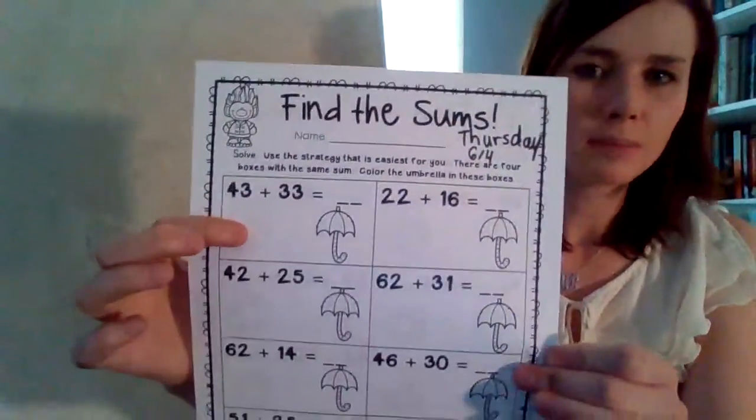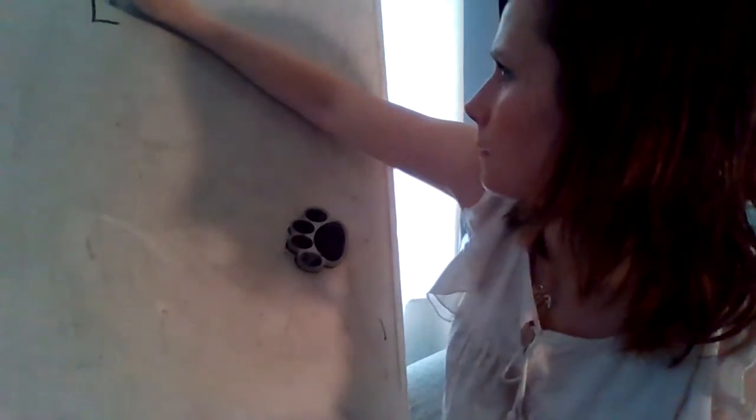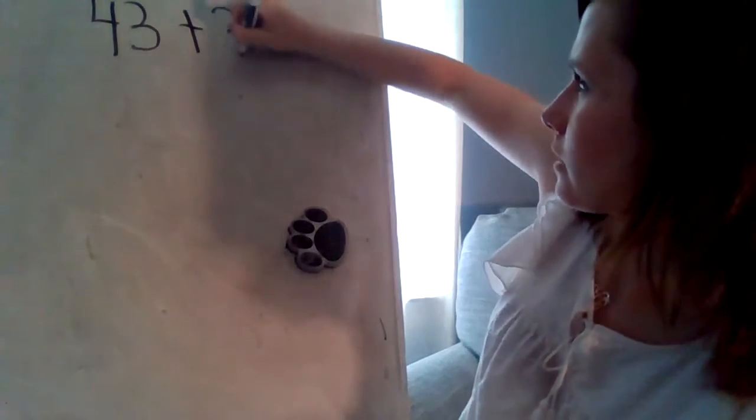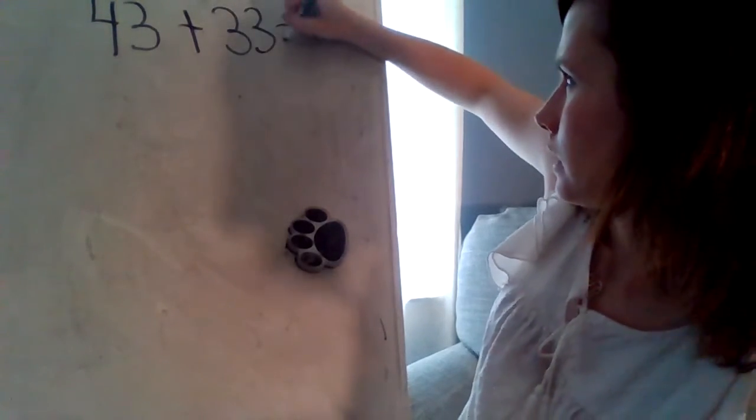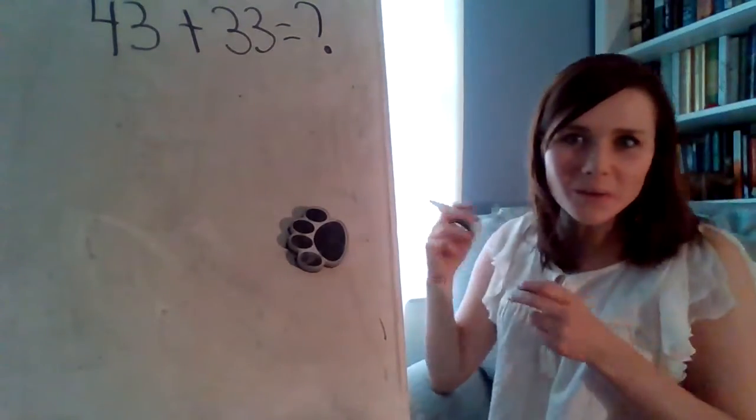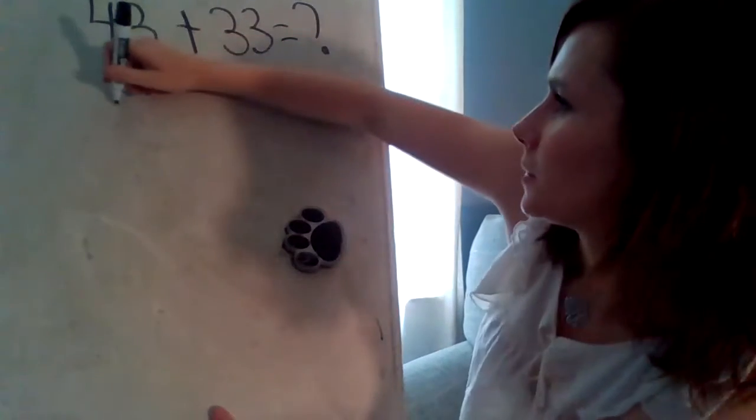Look at the first box. 43 plus 33. And I'll write it down on my board. We have 43 plus 33 equals our mystery sum, our mystery number that we don't know yet. All right. How would you like to solve it? Okay. Let's use quick tens and ones. Here we go.